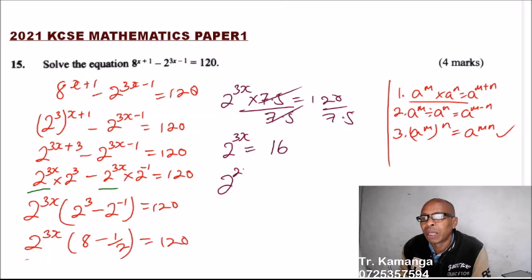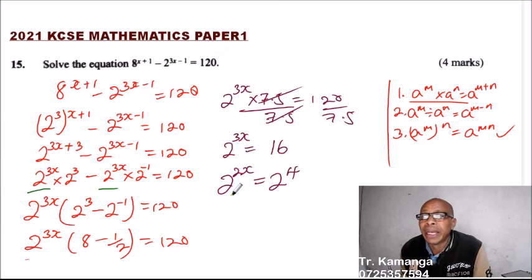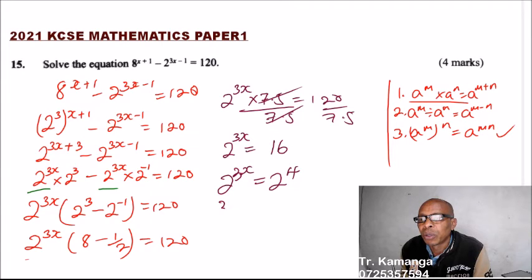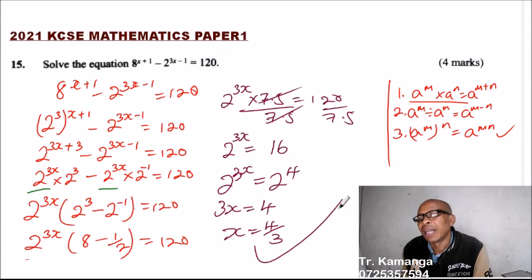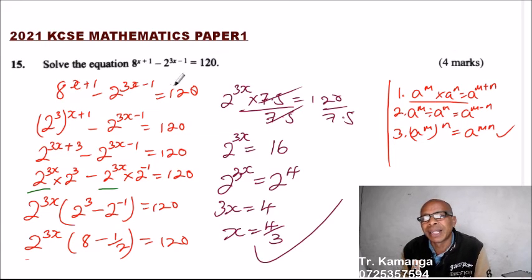In indices, when we have a common base, the exponents are equal. So 3x equals 4, which gives x equals 4 divided by 3. That is the answer.